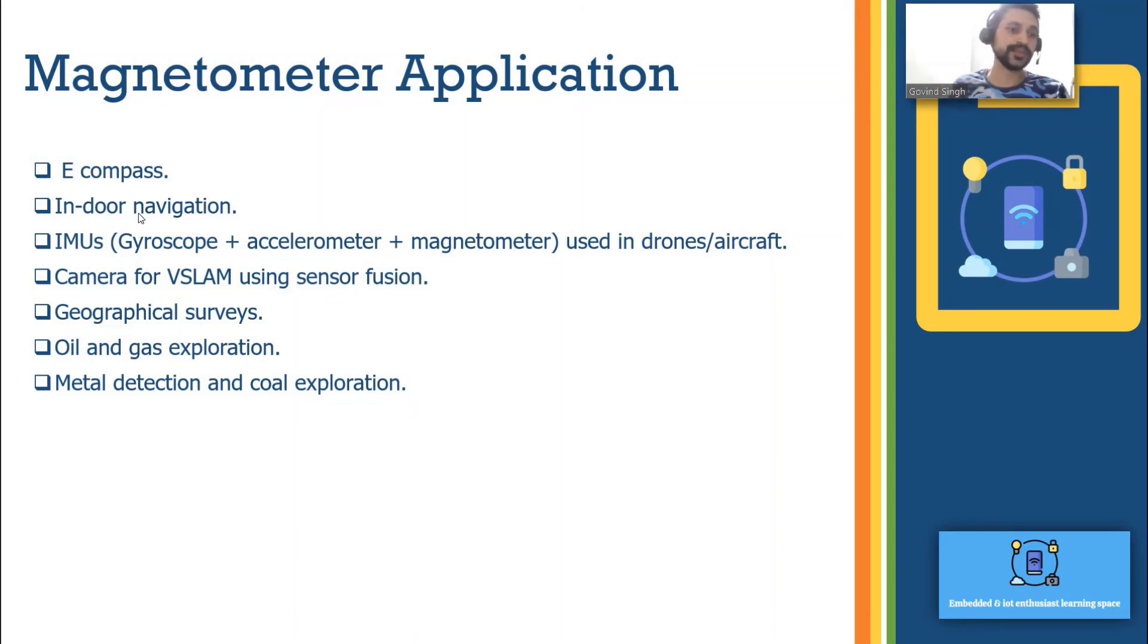Another thing is indoor navigation. Once we have e-compass it can be used in indoor navigation. In indoor navigation if we know the magnetic heading then we can do triangulation with respect to some absolute location which is having the latitude and longitude. We can basically do the triangulation and calculate our orientation in the indoor plane.